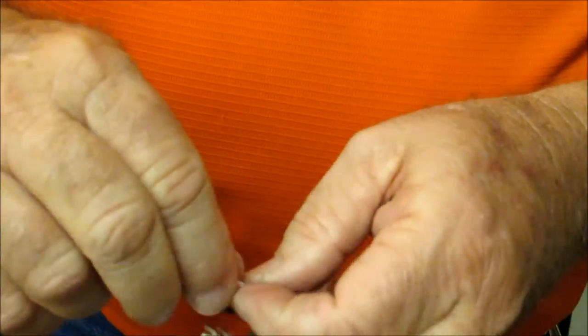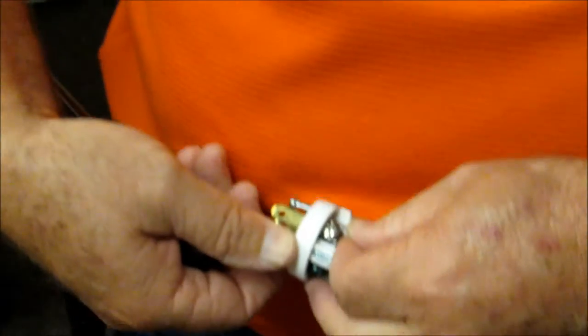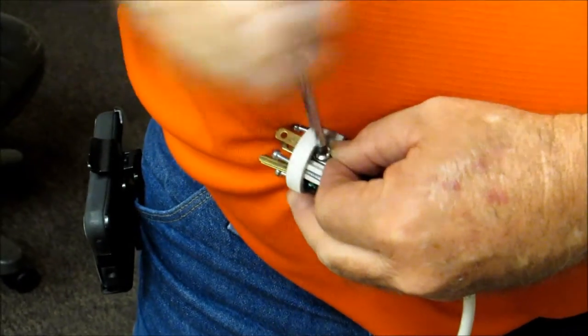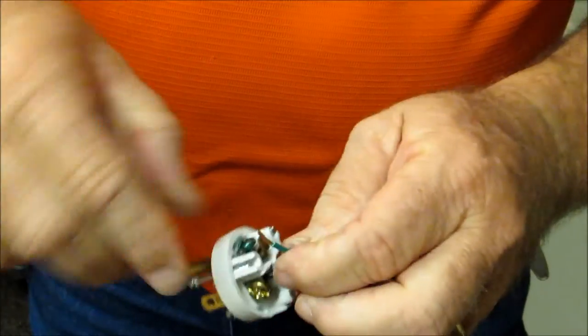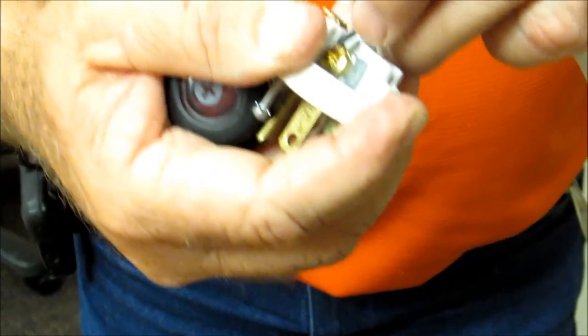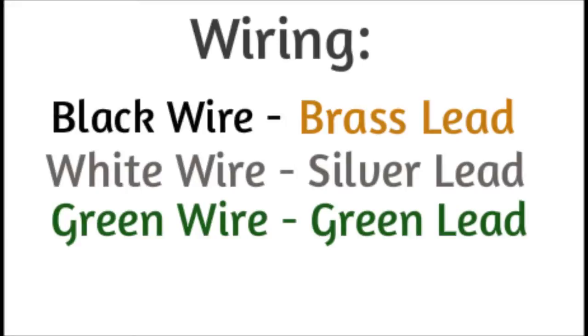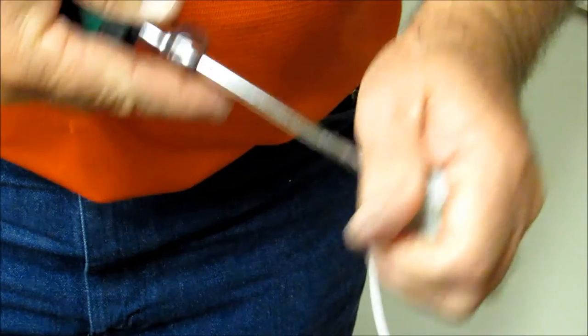And you strip that black cord quarter inch down from the lead, right? We're going to put the white one on the silver lead. White on silver lead. And then of course the ground in the ground. So the green wire goes in the ground, and make sure you have them tight.